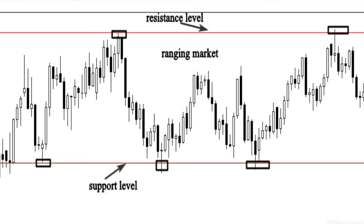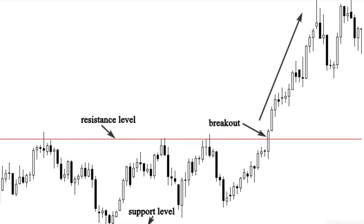When one of the players decides to take control of the market, we will see a breakout of the support or resistance level. The breakout means the ranging period is over and the beginning of a new trend will take place. This is an example chart of a bullish breakout. As you can see, the market was trading between support and resistance, and suddenly the price broke out of the resistance level — the candle that breaks the resistance is the breakout candle.